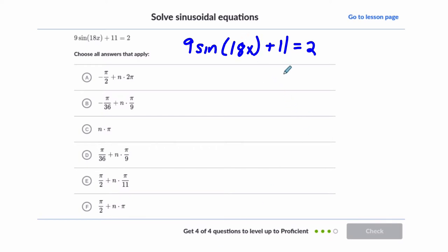Alright, so we're trying to isolate this variable. The first thing you probably want to do is subtract 11 on both sides, and that gives us 9 times the sine of 18x equals negative 9. Then, sine of 18x is what we're trying to solve for. I'm going to divide both sides by this 9. Let's cancel out. Negative 9 divided by 9 is negative 1, and the sine of 18x equals negative 1.